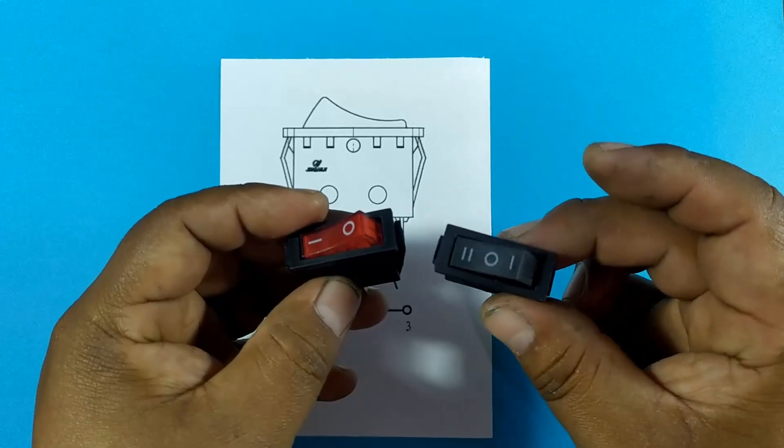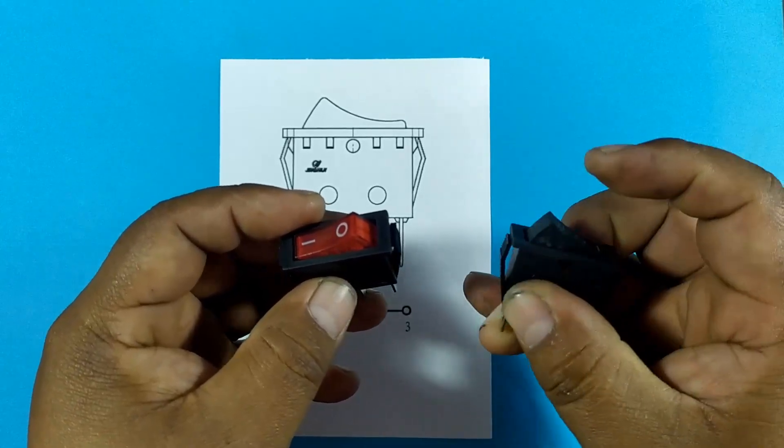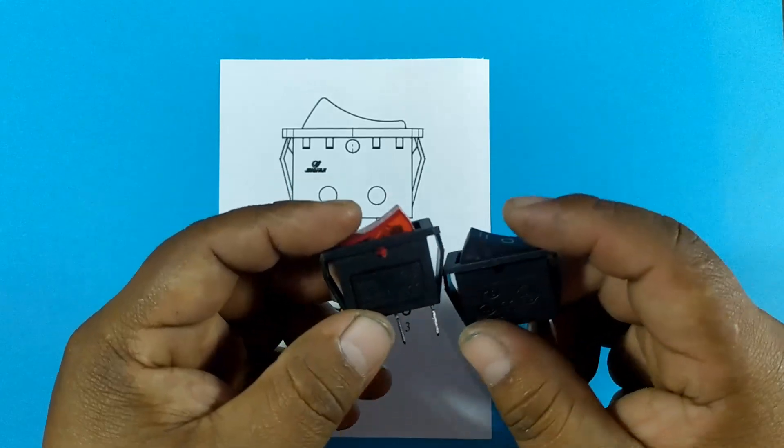In the case of this other switch, it only allows us to turn it on and off, but it doesn't have any indicators.